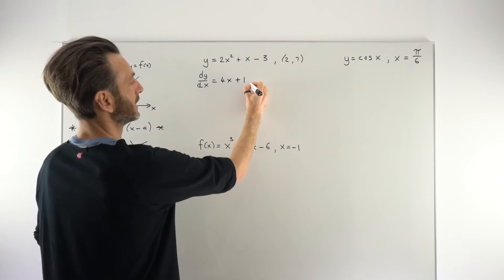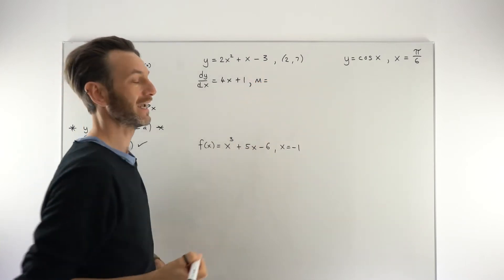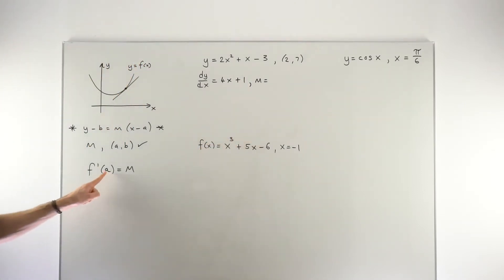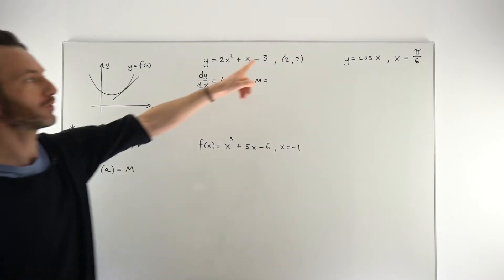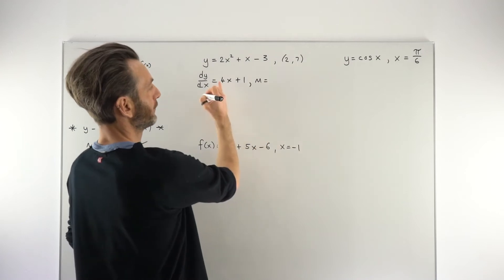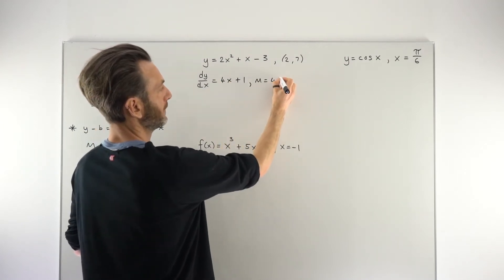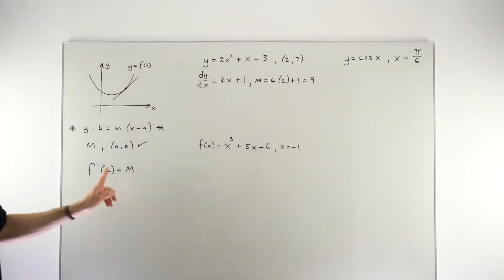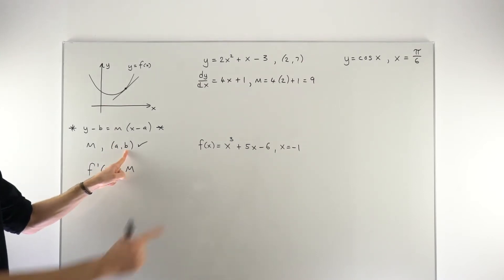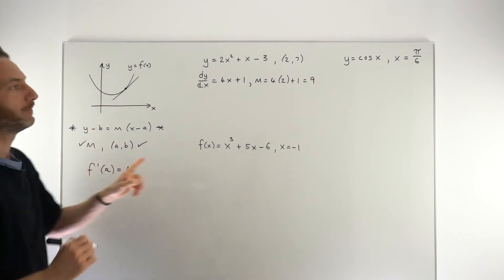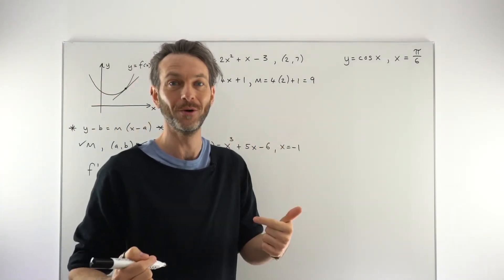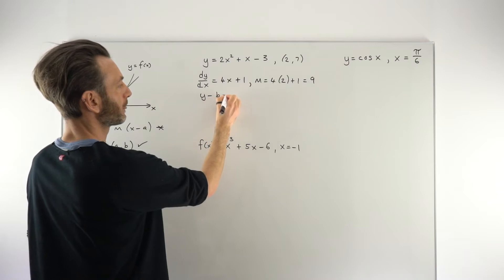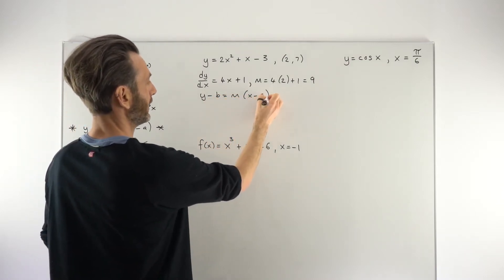To turn that derivative into the gradient, we take the derivative and substitute in the x-coordinate of the point of tangency. The x-coordinate is 2, so we're subbing in 2 to get 4 times 2 plus 1, which comes to 9. So now we've got the point of tangency (2, 7) and the gradient. We just need to plug those values into the straight line formula y minus b equals m times x minus a, and now it's just algebra.